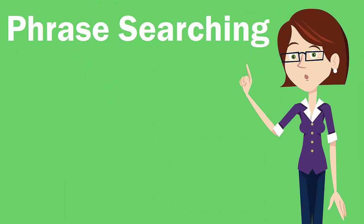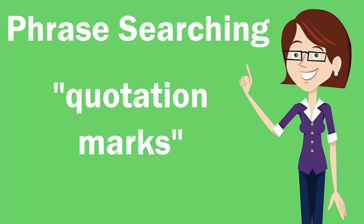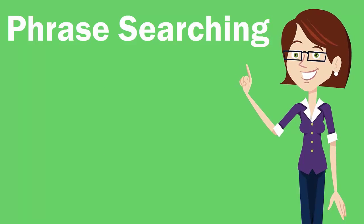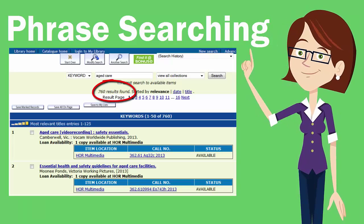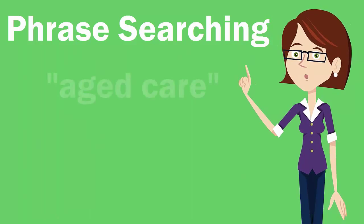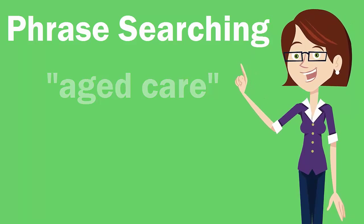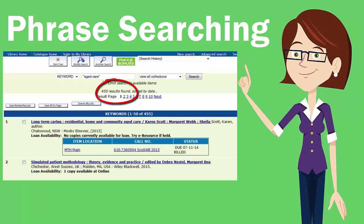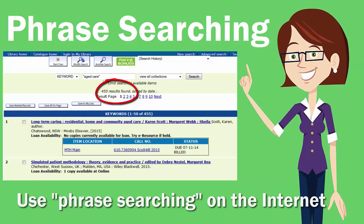The last technique is phrase searching. This is when you use double quotation marks around two or more words in the exact order you want in your results. For example, searching for 'aged care' will return many results, but those words can be all over the place. Searching for them in double quotation marks will cut down the number of results and make the search more focused. This tip also works well on the internet.